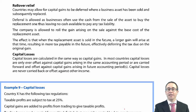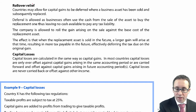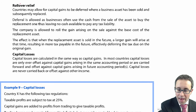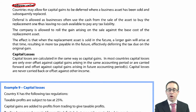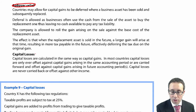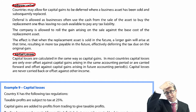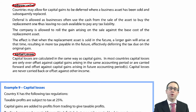We're now going to complete the capital tax section by looking at two small parts. First, we're going to look at the concept of rollover relief — there are likely no calculations examinable based on the syllabus, just the concept. However, we also need to think about how to utilise capital losses, as examples have asked us to show how capital losses are used from a computational perspective.